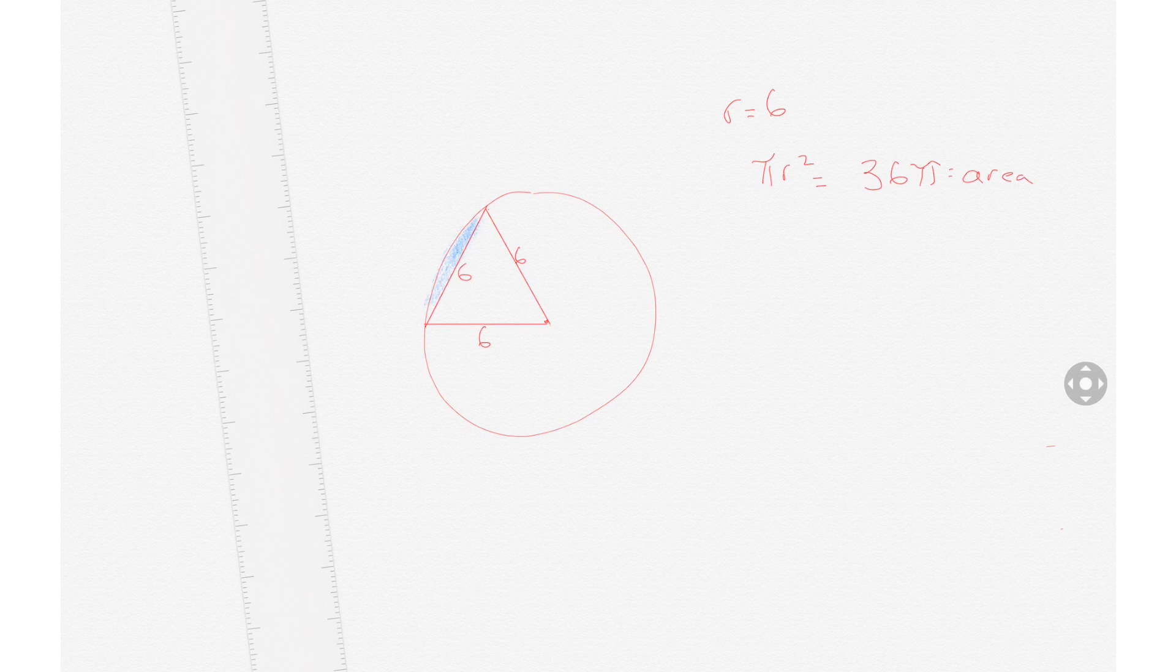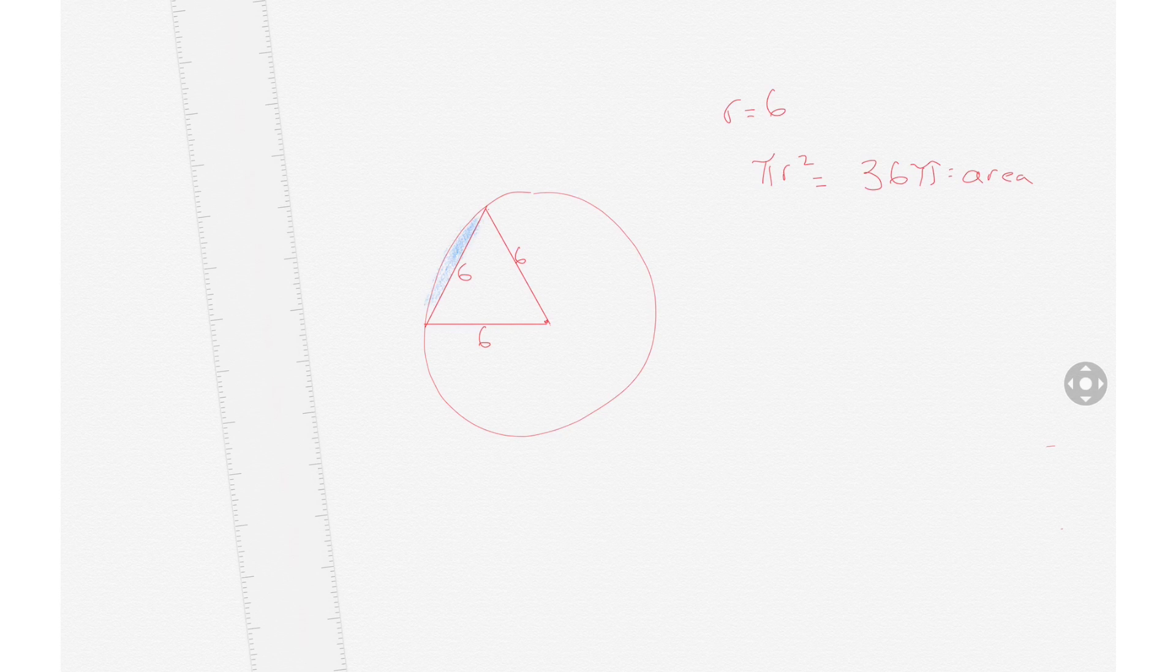And that makes sense because it's 1/6 of the whole circle, and 1/6 of 36 pi is 6 pi.